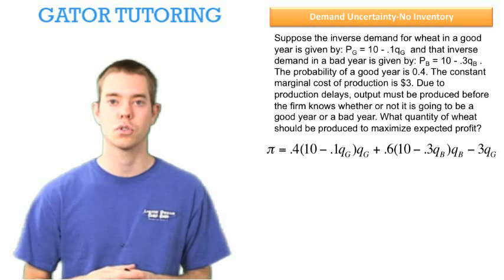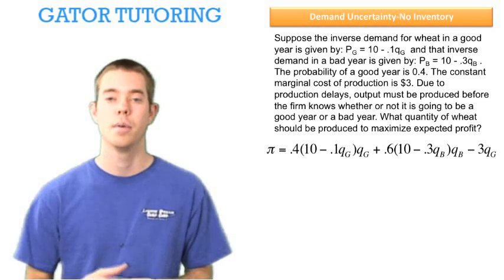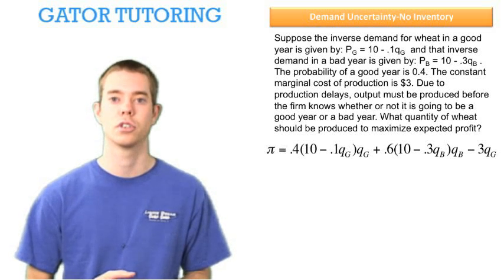So this goes back to our constraint, which makes sense, that says the quantity we sell in a good year must be greater than the quantity we sell in a bad year. So be careful when you're writing that profit function. There is no marginal cost associated with QB, only with QG.